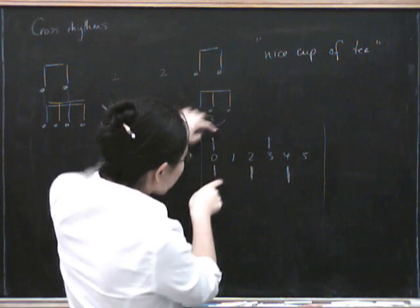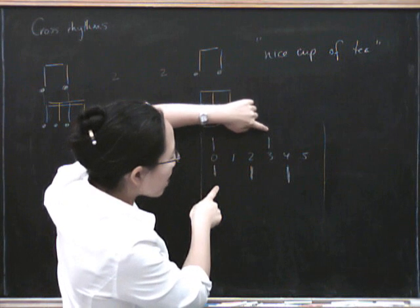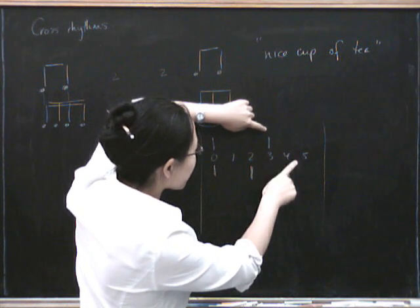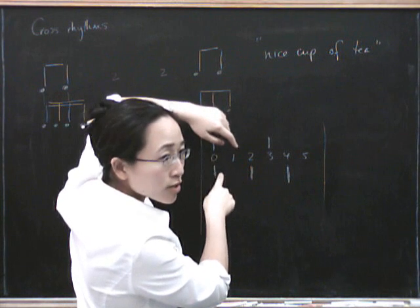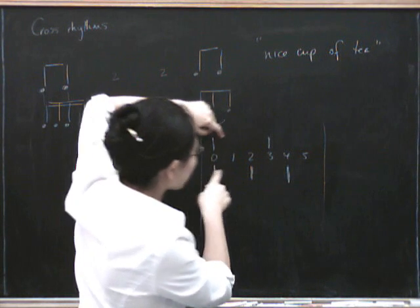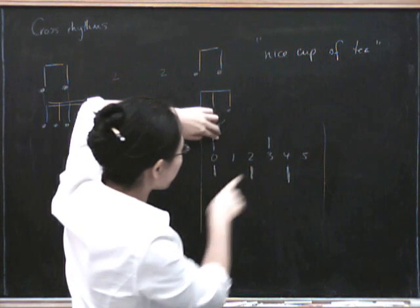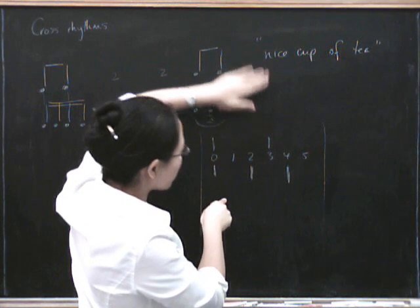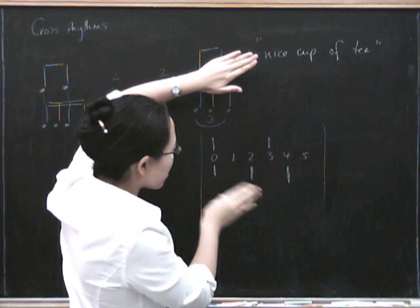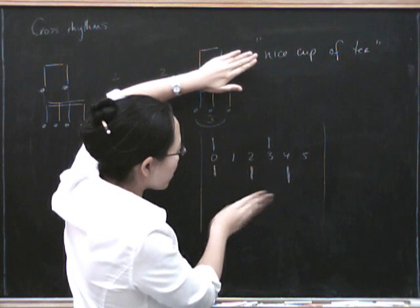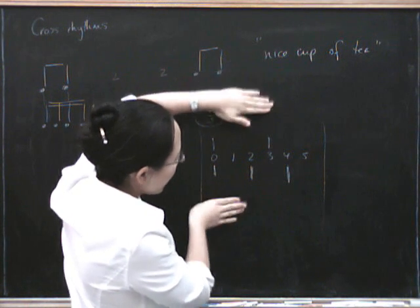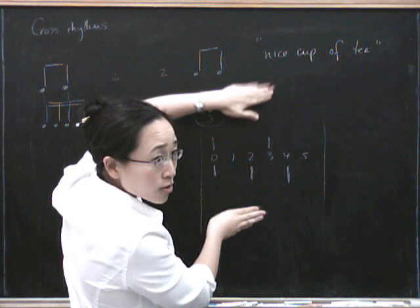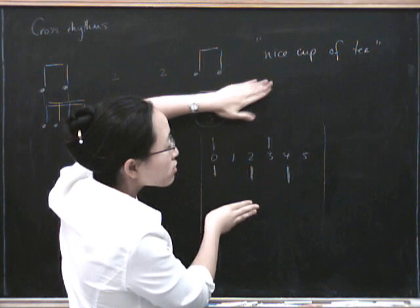Along the top we divide into six, so counting 0 through 5 repeatedly for the two-rhythm, and for the three-rhythm we likewise count 0 through 5. Putting both together gives us the combined pattern cycling through 0, 1, 2, 3, 4, 5 — that's 'nice cup of tea.'